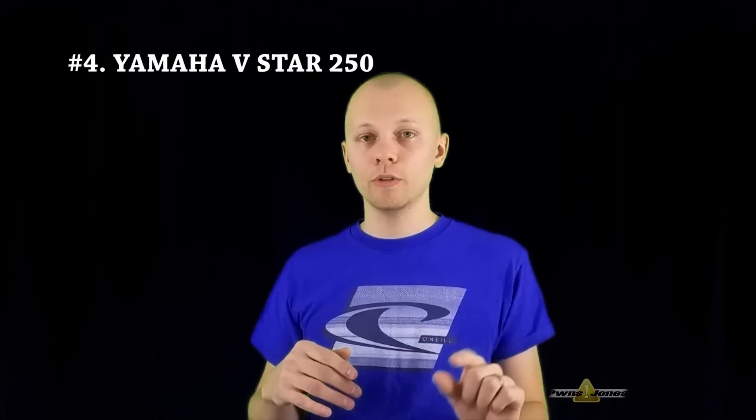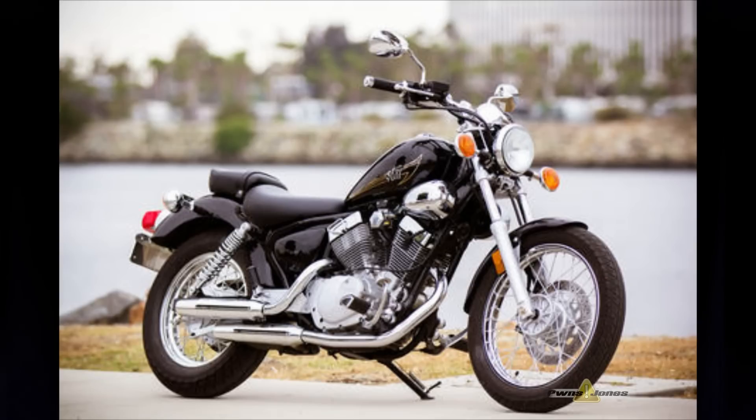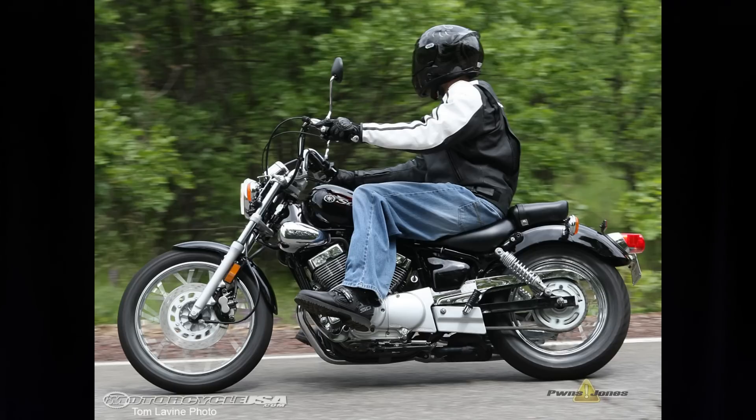Number four, we actually have a cruiser making the list here. Yamaha V-Star 250. It is a V-twin, and it looks a lot like a bigger bike. You could ride this around, and no one would really know that you're riding a beginner bike. It is the only bike in its class that has a V-twin, and it's 27 inches to that seat, so you get a good size beginner bike. The bike has 249 cc's to putt you around town, and apparently it's got a pretty good ride.